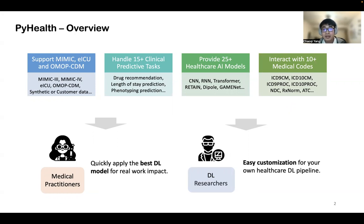In the package, we can also support right now more than 15 clinical predictive tasks, such as drug recommendation, mortality prediction, and phenotype prediction. Right now these task definitions are more as examples for users to try. We borrow the definition of the tasks from the recent literature. But if users want to try their own definitions, we welcome them to follow our template and design their own task definition on their processed dataset.